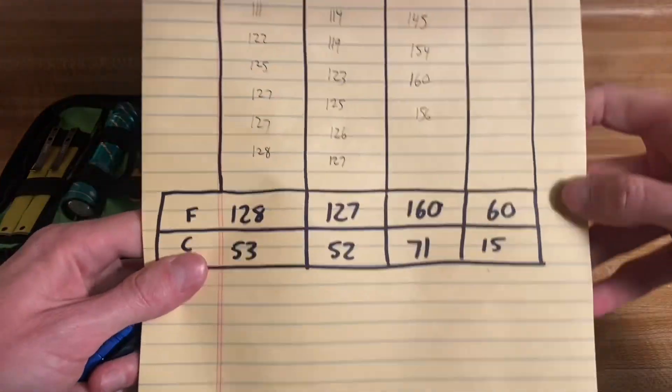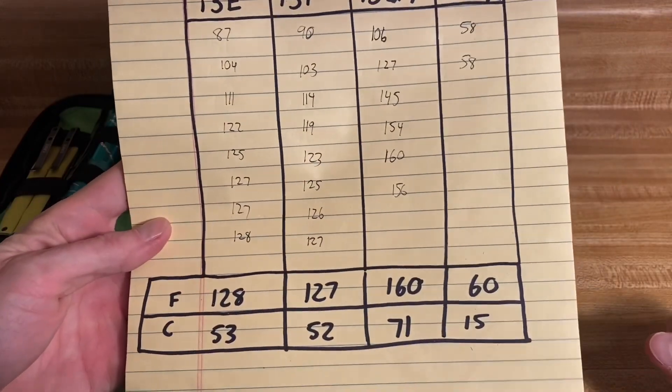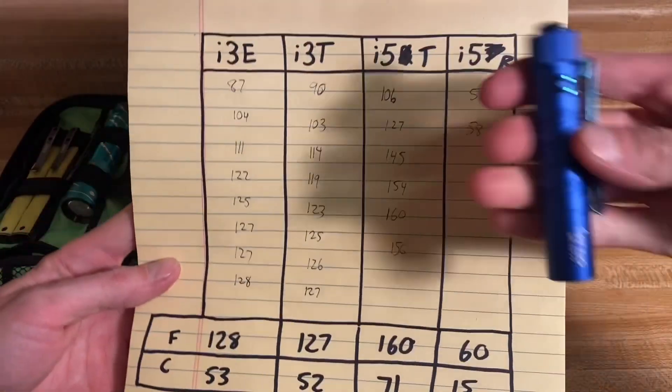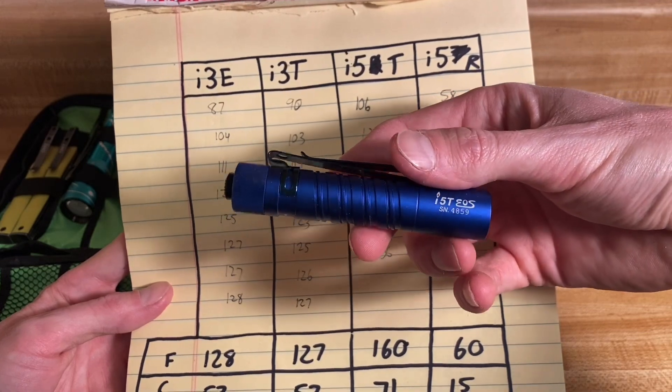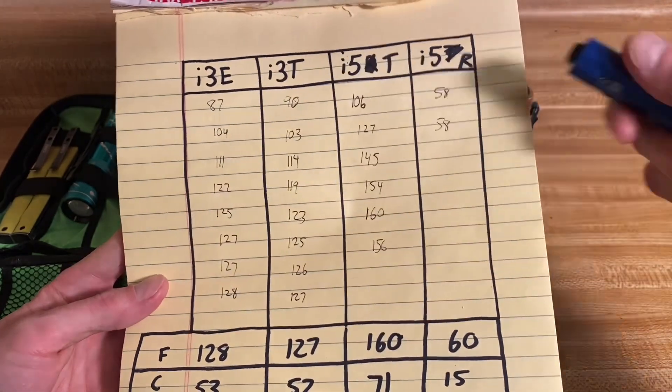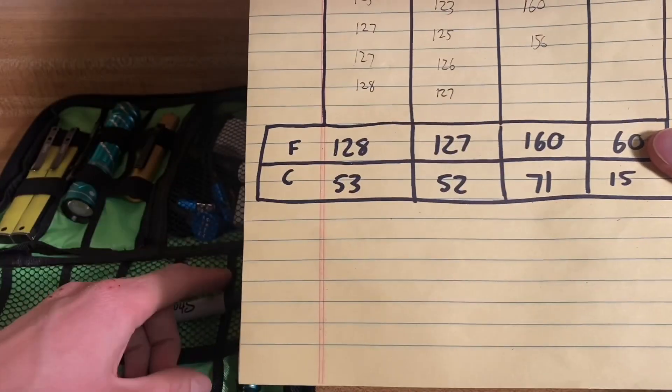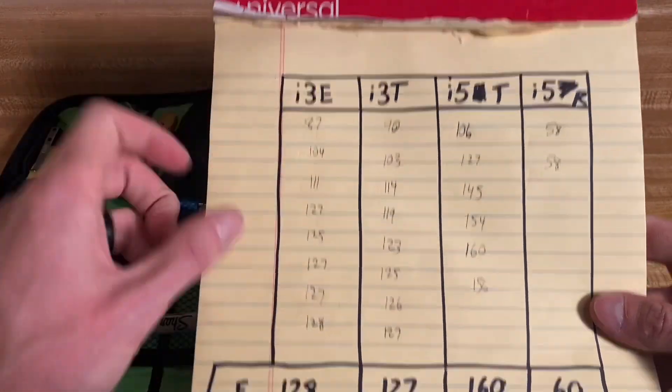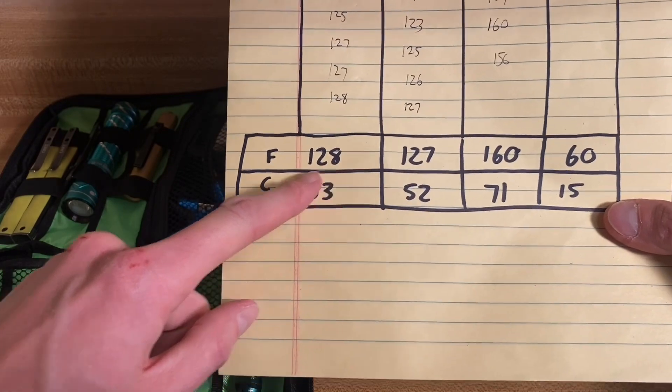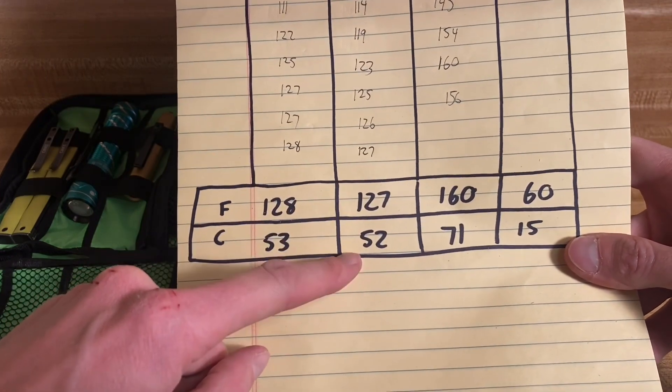The i5T was the winner or loser, depending on how you look at it, as far as heat goes. It got the hottest for sure: 160 degrees Fahrenheit, 71 degrees Celsius. This little thing was real hot. Wouldn't want that in your pocket unless you wanted a brand with this knurling. Next to that, the i3E and i3T were kind of the same. The i3E reached 128 degrees Fahrenheit or 53 degrees Celsius, and the i3T reached 127 Fahrenheit or 52 Celsius.